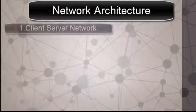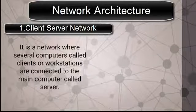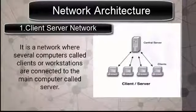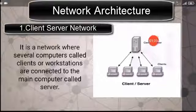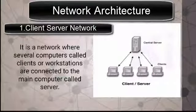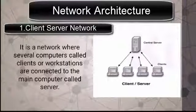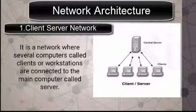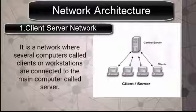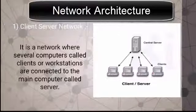In a client-server network, several computers called clients and workstations are connected to the main computer called the server. The central server is the main computer through which all other computers are connected. A server provides services to clients and controls access to hardware, software, and other resources. Clients are computers that request services like data retrieval and storage from the server.